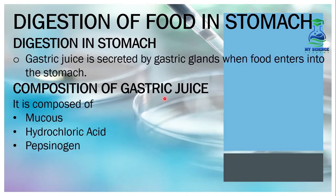The composition of gastric juice includes mucus, hydrochloric acid, and pepsinogen. Mucus creates a protective covering inside the stomach so that the stomach lining is not destroyed by the hydrochloric acid and pepsinogen.